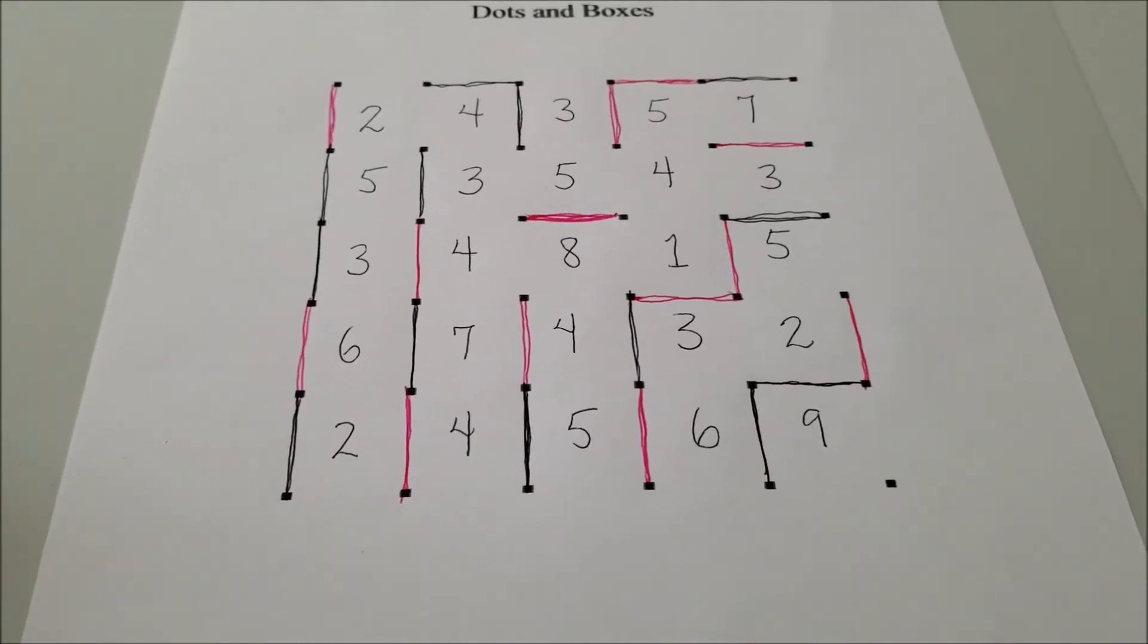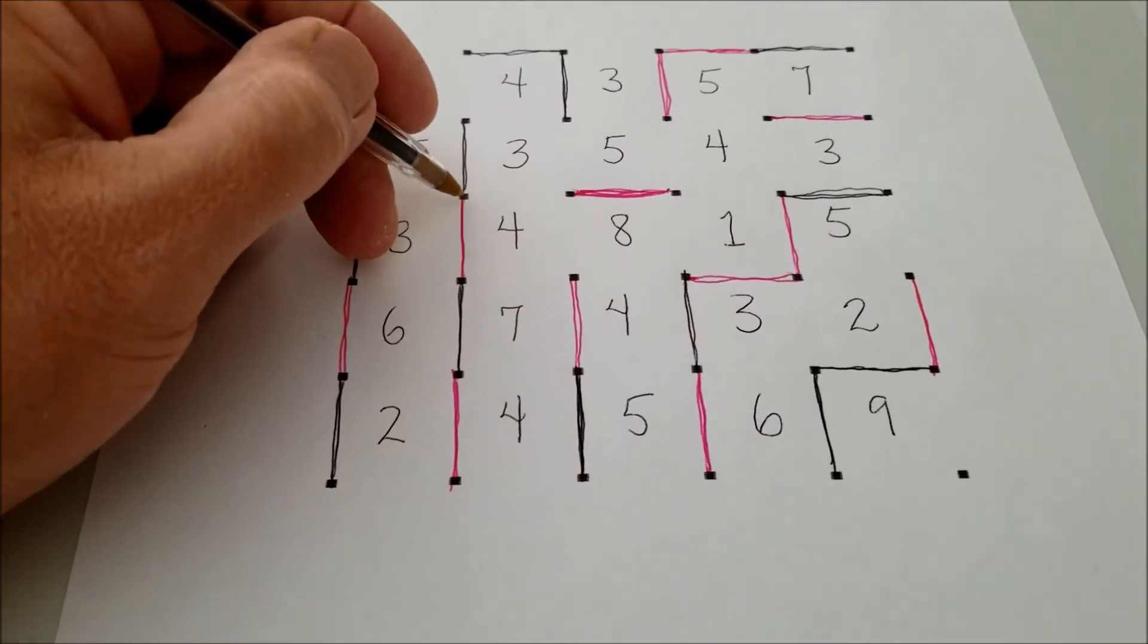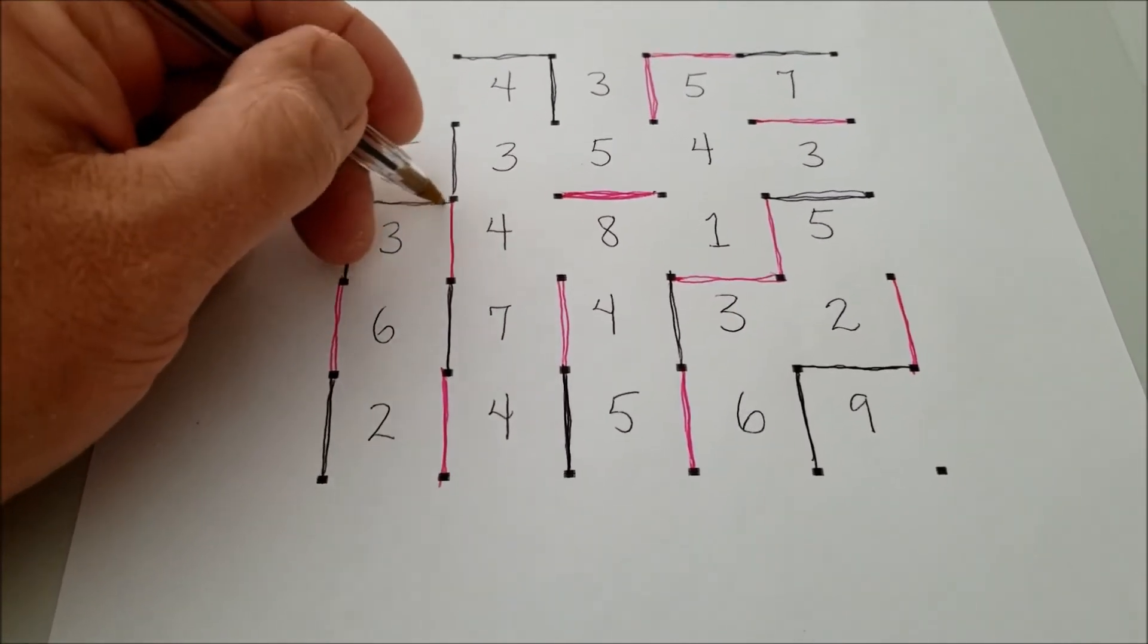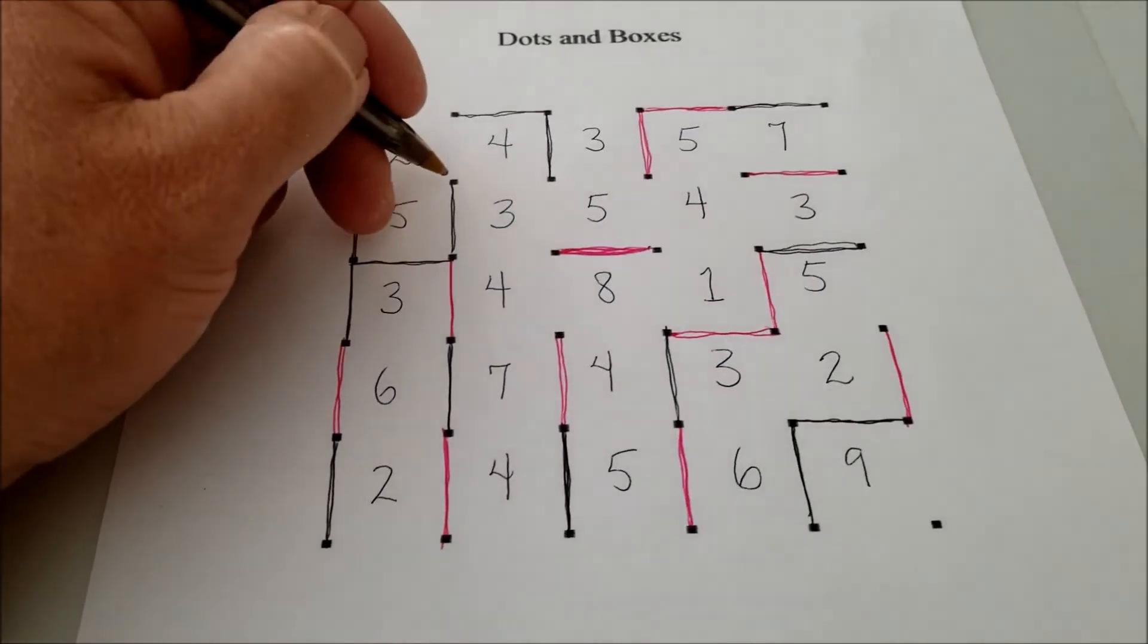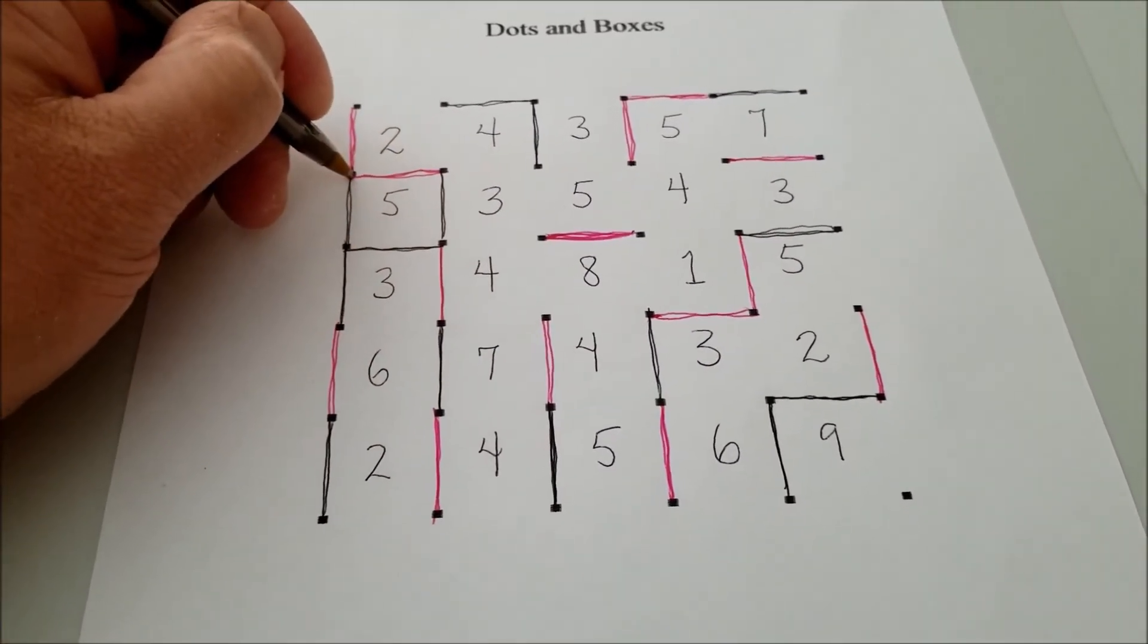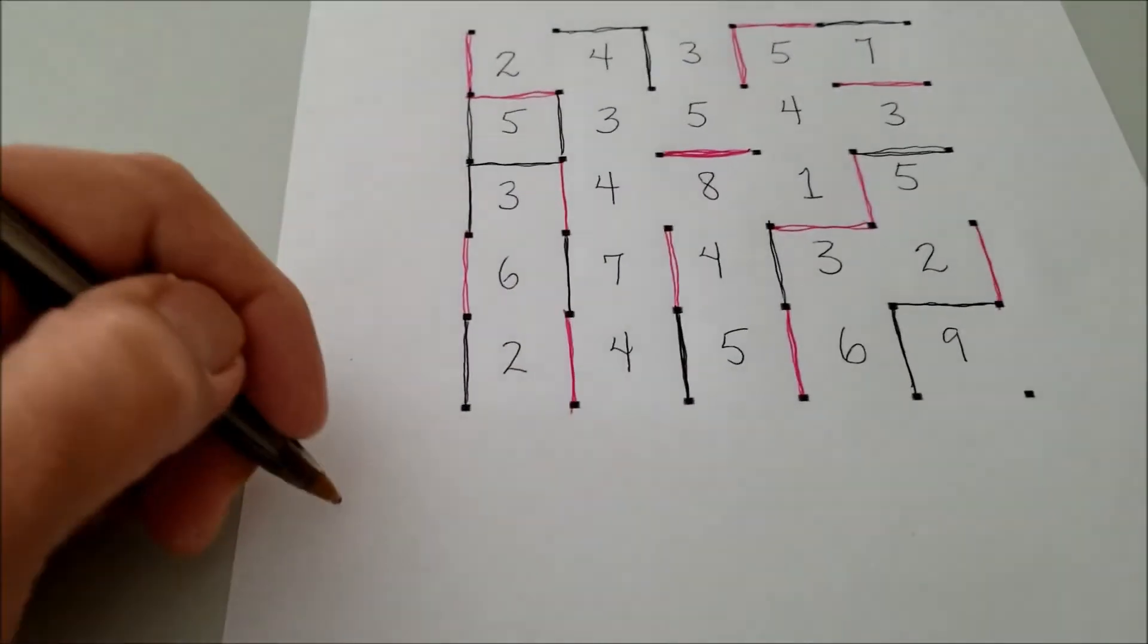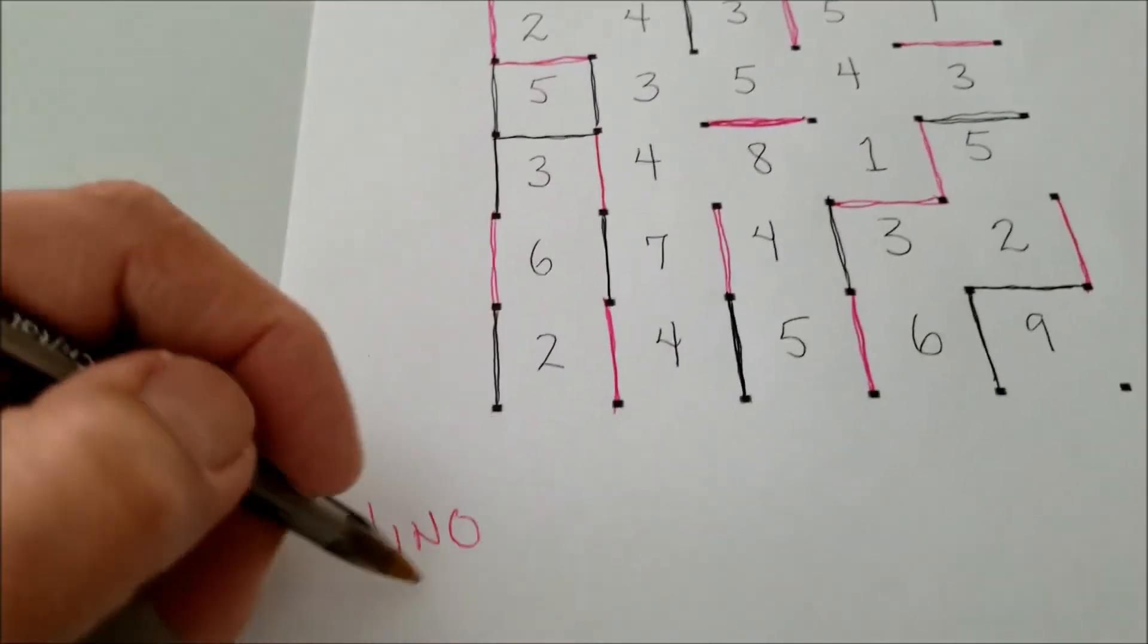So I'm going to go ahead and pretend like I've made a mistake. So let's say somebody takes their turn and does this. So now if I'm the other person, I will connect these dots to make a box. So let's say that was Mr. Hino. I just got myself five points.